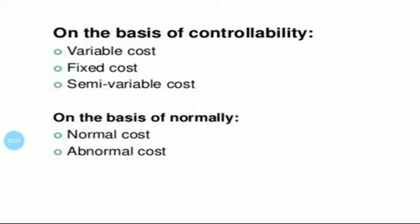Step cost is also known as changing cost. Step cost is a variant of semi-variable cost. The best example of step cost is electricity — that means, up to a certain level the electricity charge remains constant; after that, it jumps to an increasing point. This is known as step cost. These are the classification of cost on the basis of controllability.